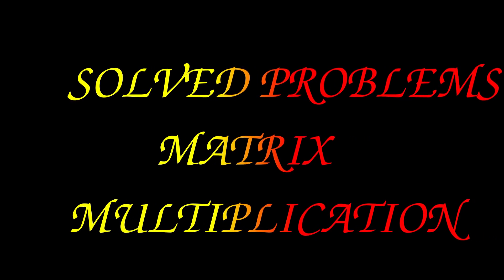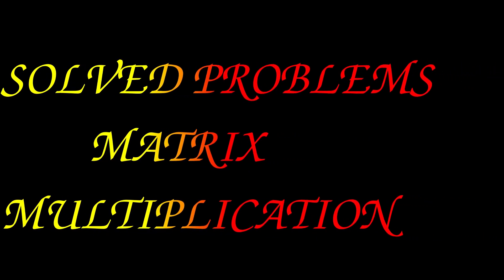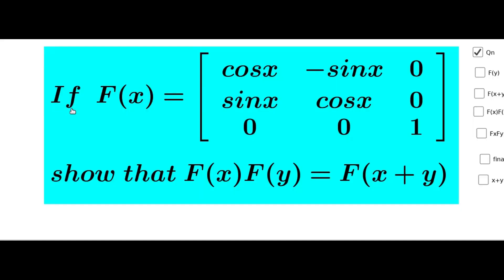Hi students. In the model, matrix multiplication based exam problem. If f of x equal to matrix [cos x, -sin x, 0; sin x, cos x, 0; 0, 0, 1], then show that f of x into f of y equal to f of x plus y.